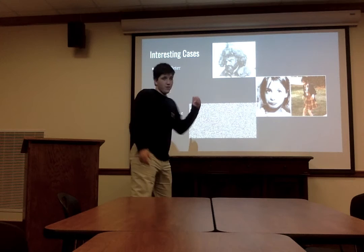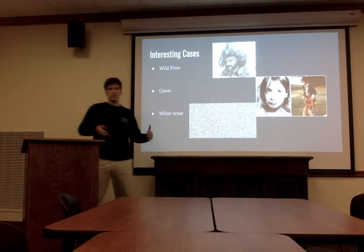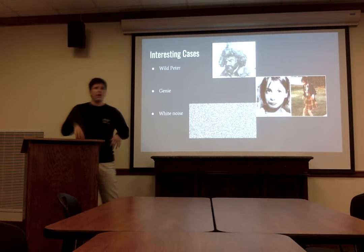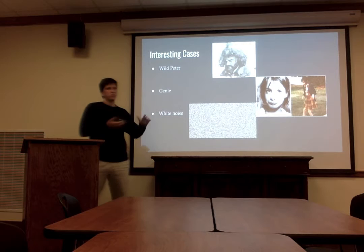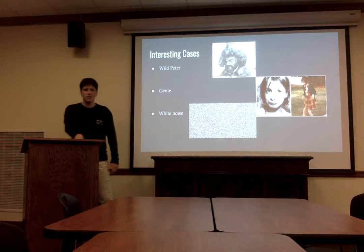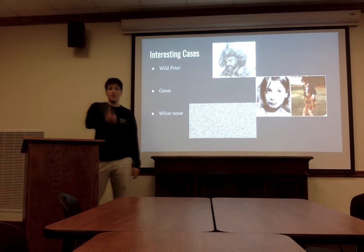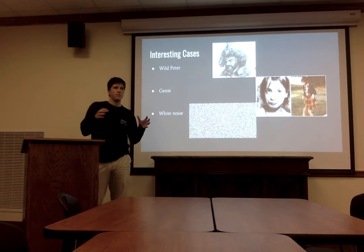The first interesting case study is Wild Peter, found in England around the 1720s at the age of 12. He had survived by eating sap and things from nature. When found, he was presented to King George and put back into society. He lived in society for over 60 years, but was only ever able to learn two phrases — 'Peter' and 'King George' — which shows that a critical period of learning exists.